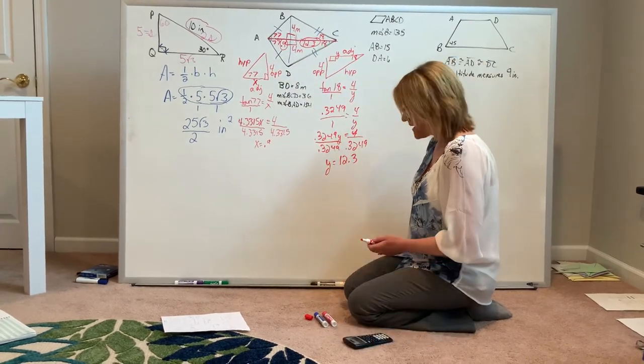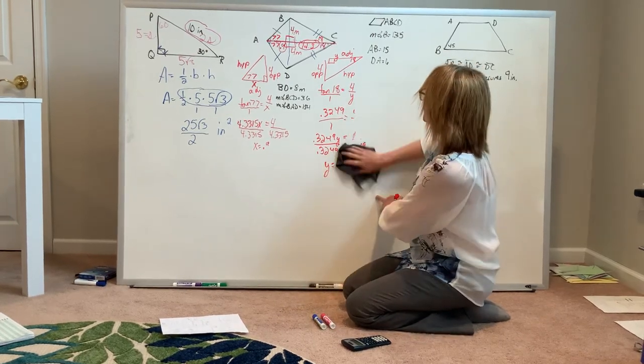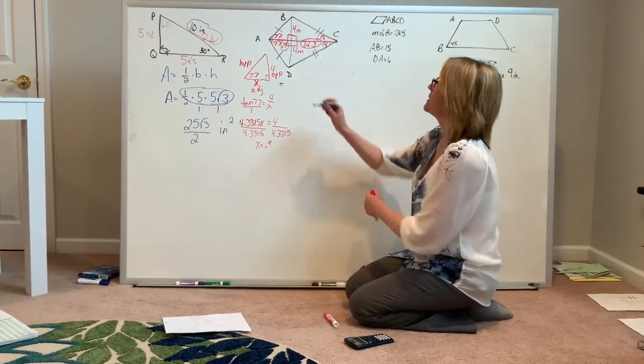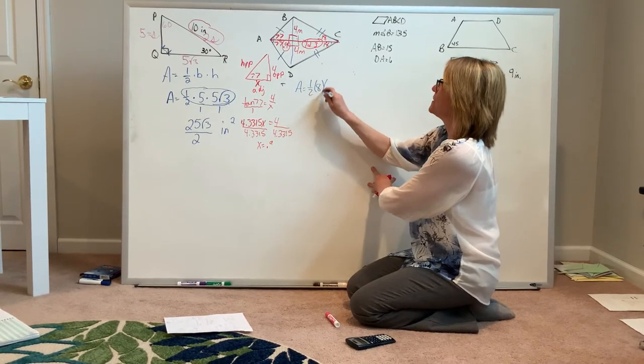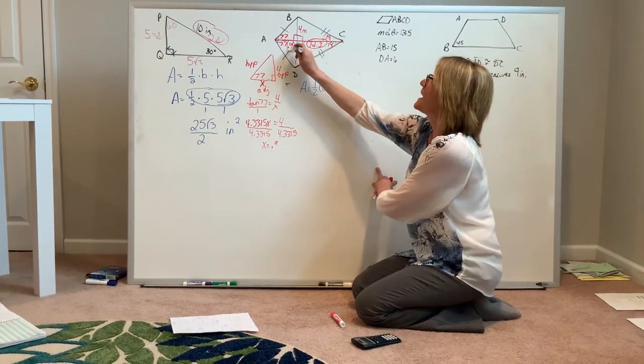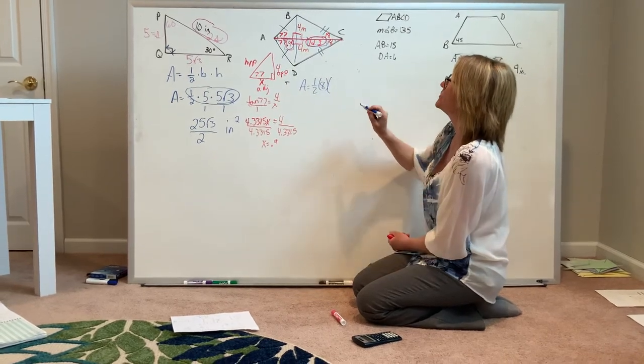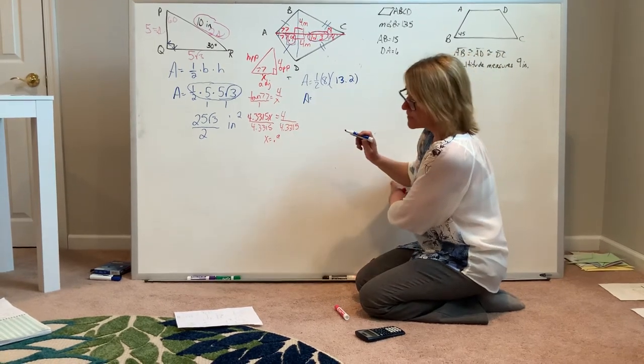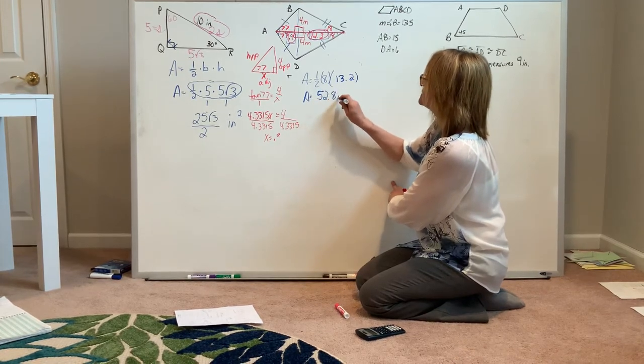Even after all that work, we aren't finished because the initial goal was to find the area. Back to my area formula. The area of a kite is equal to one half times the length of one diagonal, which is 8, times the length of the other diagonal. My second diagonal is a combination of the two segments we just found: 0.9 combined with 12.3 gives us a length of 13.2. Our final result is an area of approximately 52.8 square meters.